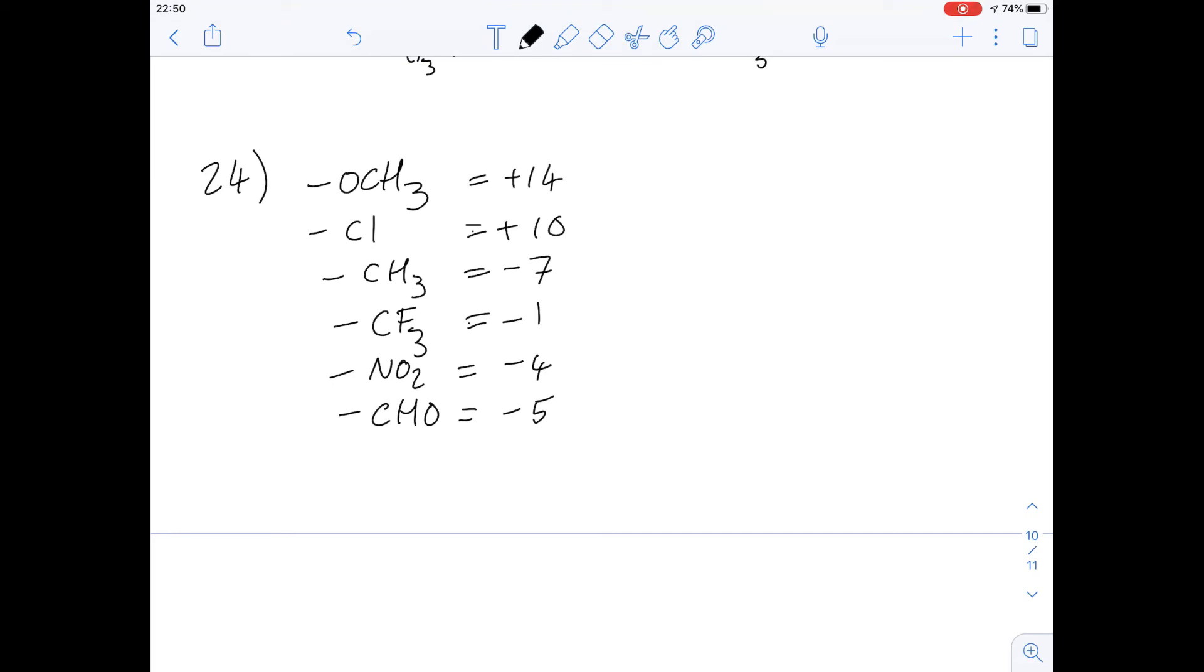So if the R group is more positive than the cyanide group, which has an energy of minus 2, then it will rotate in. So how many of these groups have an energy greater than minus 2? It's going to be these three and so the answer is going to be three. So the answer for 24 is C.